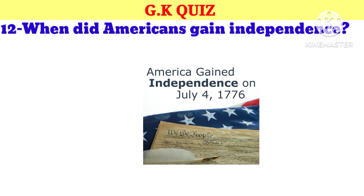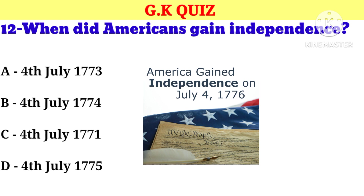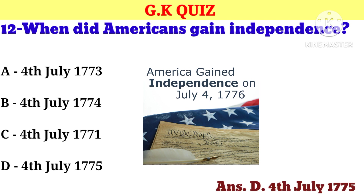Question number 12. When did Americans gain independence? Your options: A. 4th July 1773, B. 4th July 1774, C. 4th July 1771, D. 4th July 1775. And now your correct answer is 4th July 1775.